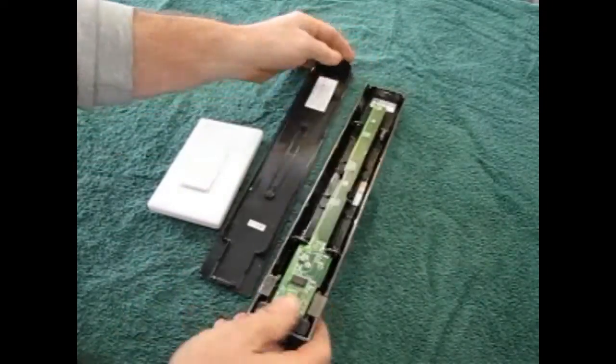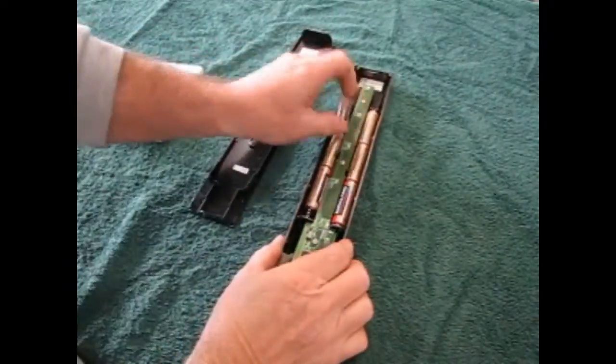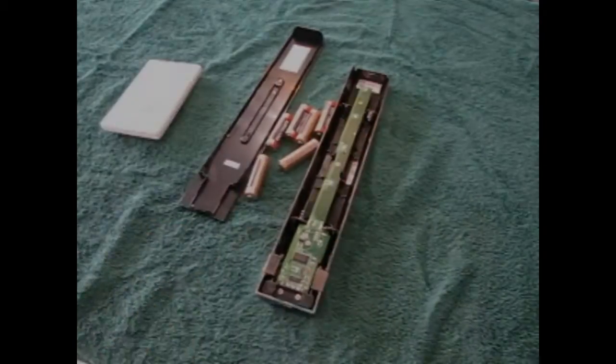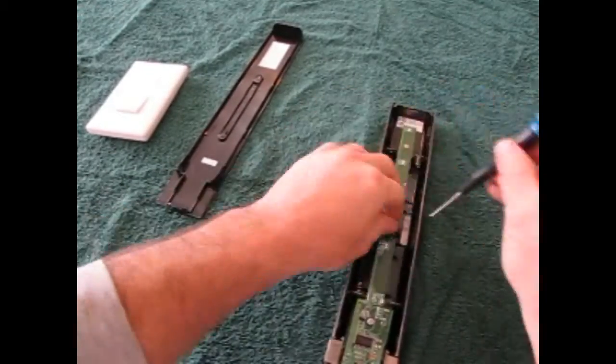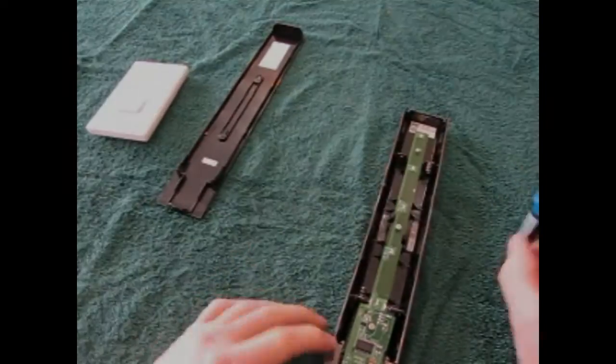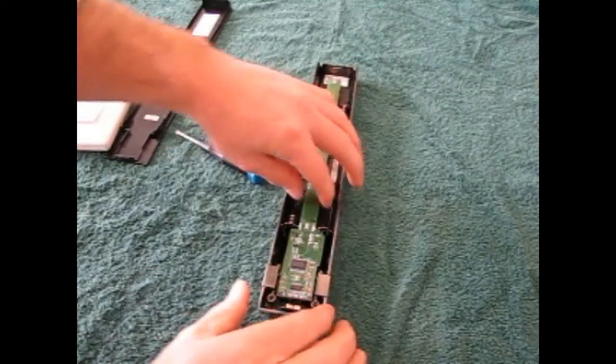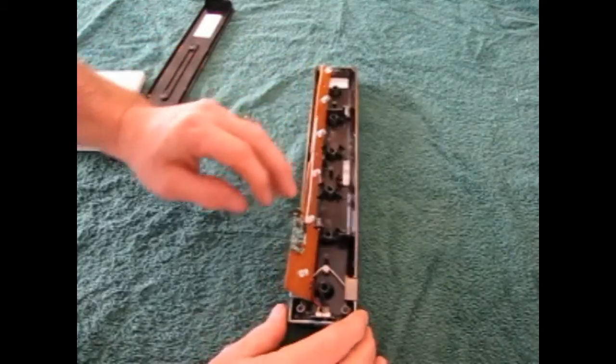First, take the case off the light. Then, remove the batteries. Remove the screws that are holding the circuit board in place. And carefully remove it. Don't pull any of the wires off of it.